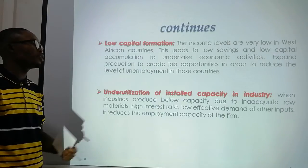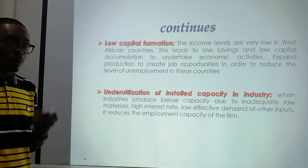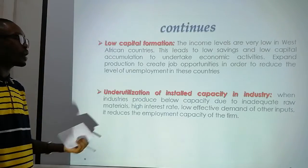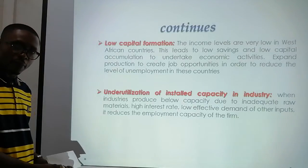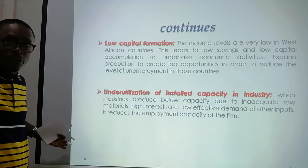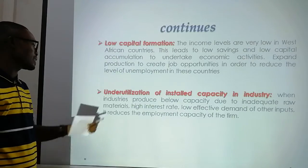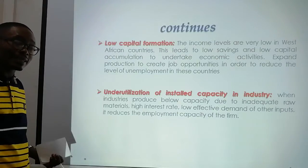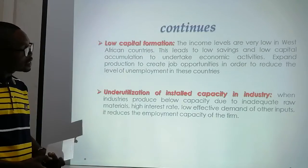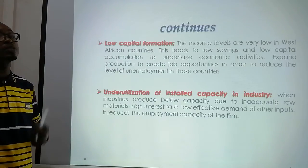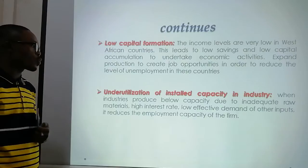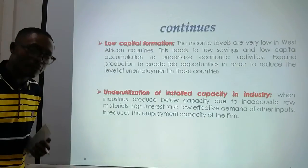If a company wants to expand its markets, branches, or plants, it automatically needs capital. If the employer finds it difficult to get capital to expand, the ability to employ people is low. The company is not able to expand its plant or branches to employ more people. We also have underutilization of installed capacity — when a company operates on a smaller unit, it may be difficult to employ more hands. If the company expands its capacity, it will take on more people; but underutilization forces unemployment.